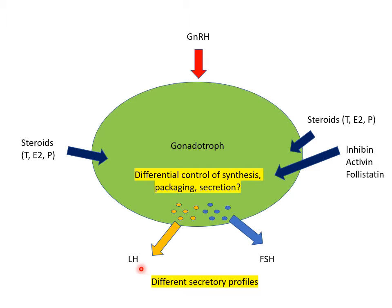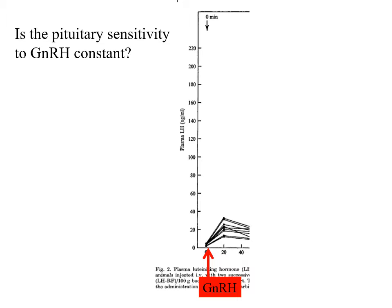Another important variable contributing to the different secretory profiles of LH and FSH is the major stimulus coming in — GnRH. It isn't coming down the portal blood vessels all the time; it's now obvious that it comes down in discrete pulses. We're going to spend the next few minutes looking at pulsatile secretion of GnRH. GnRH had been identified as a small decapeptide and as such it could be easily synthesized, becoming widely available as an experimental tool. One of the first things people did was to see to what extent the pituitary changed its sensitivity to GnRH under different conditions.